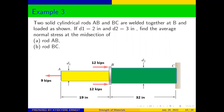Two solid cylindrical rods AB and BC are welded together at B and loaded as shown. If d1 is equal to two inches and d2 is equal to three inches, find the average normal stress at the mid-section of rod AB and rod BC. This is our diagram — let us look at how to solve the question.